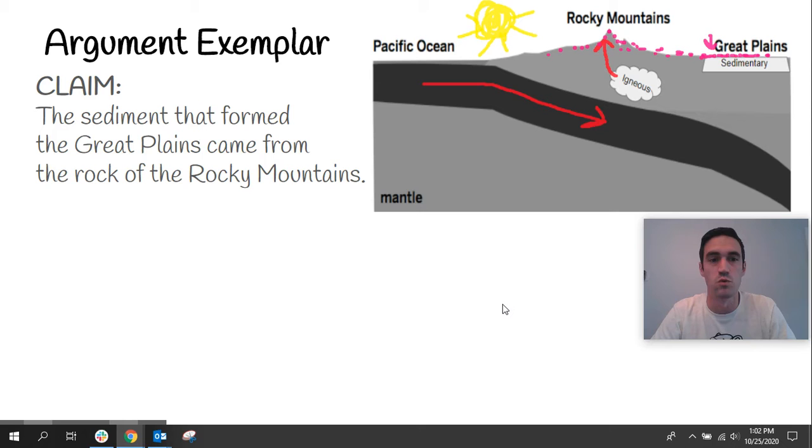If you said claim one, the sediment that formed the Great Plains came from the rock of the Rocky Mountains, that is fine. However, you had to actually give me your full claim. So my claim would have been: The claim that the sediment that formed the Great Plains came from the rock of the Rocky Mountains.